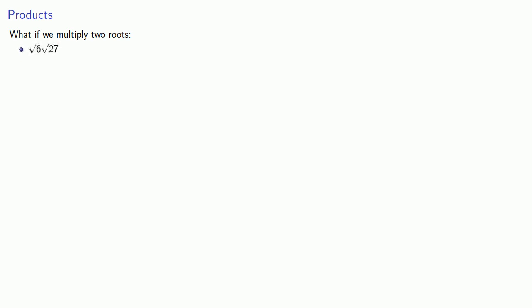What if we multiply two roots, like the principal square root of 6 times the principal square root of 27, or square root of negative 4 times square root of 2, or square root of negative 10 times square root of negative 10?